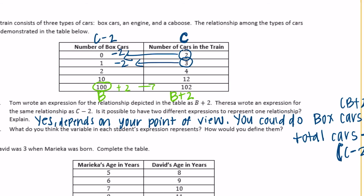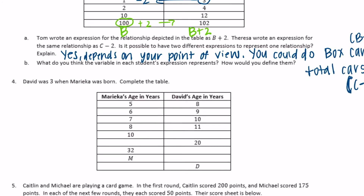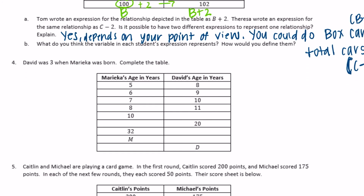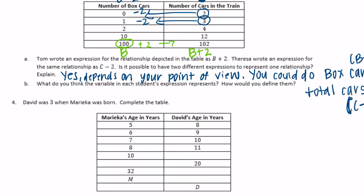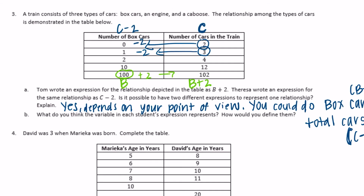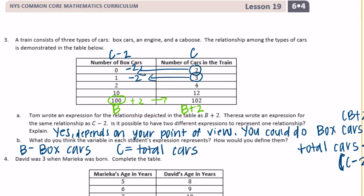You've got to be careful about where you're plugging in those expressions and making sure you're doing them in the right order. What do the variables represent? B represents boxcars and c represents the total number of cars — we highlighted those where c is the total number of cars and b represents the boxcars.